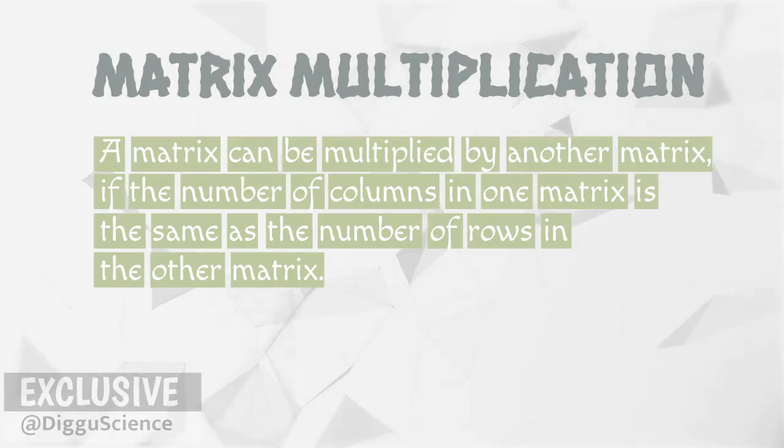In matrix multiplication, a matrix can be multiplied by another matrix if the number of columns in one matrix is the same as the number of rows in the other matrix.